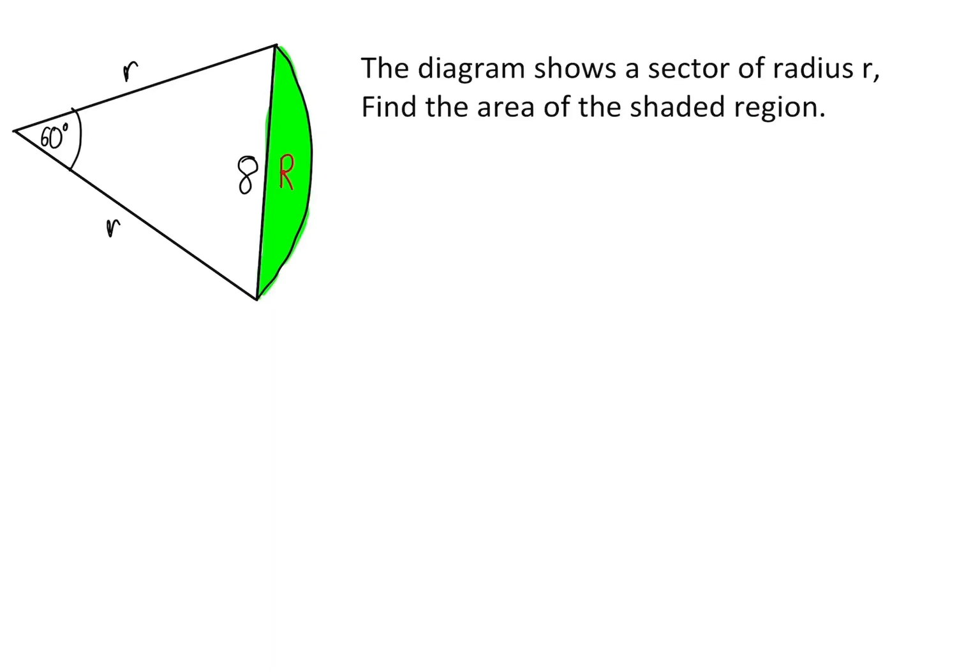Okay, so today in this video I'll be going through two questions that cover some essential GCSE Maths techniques that you should know for your exams. In this first question we have a sector of 60 degrees with radius r and we are told to find this shaded area.